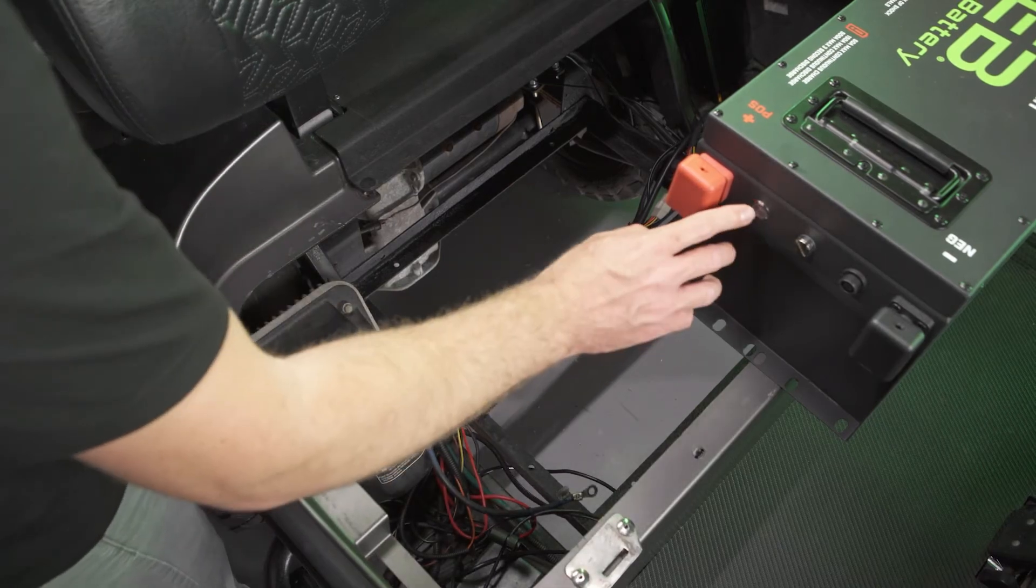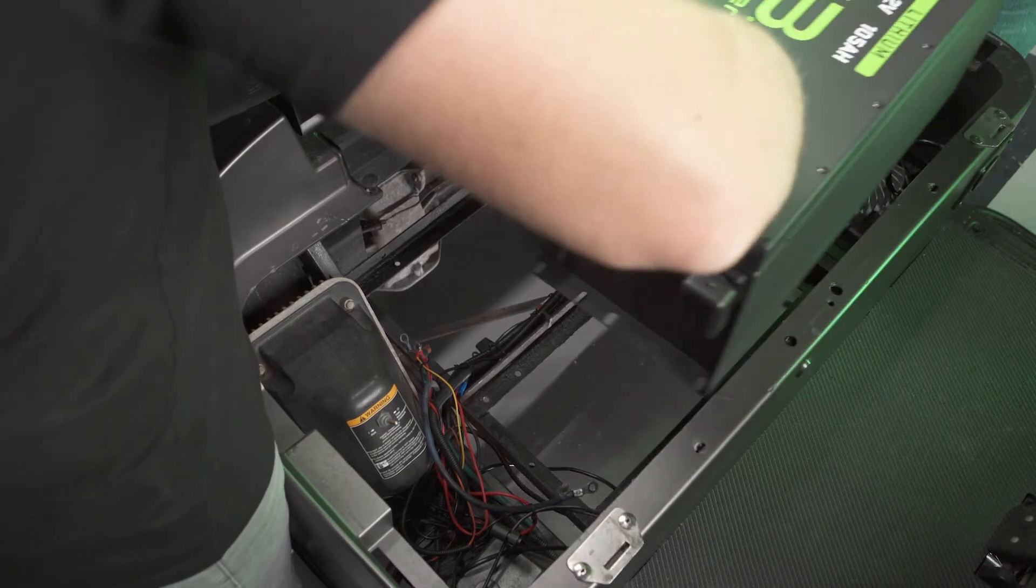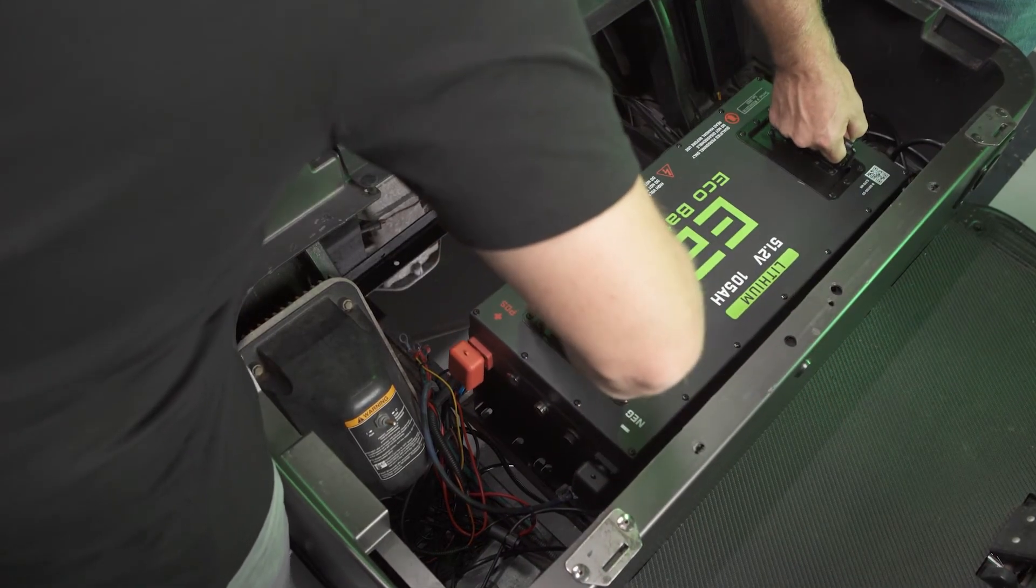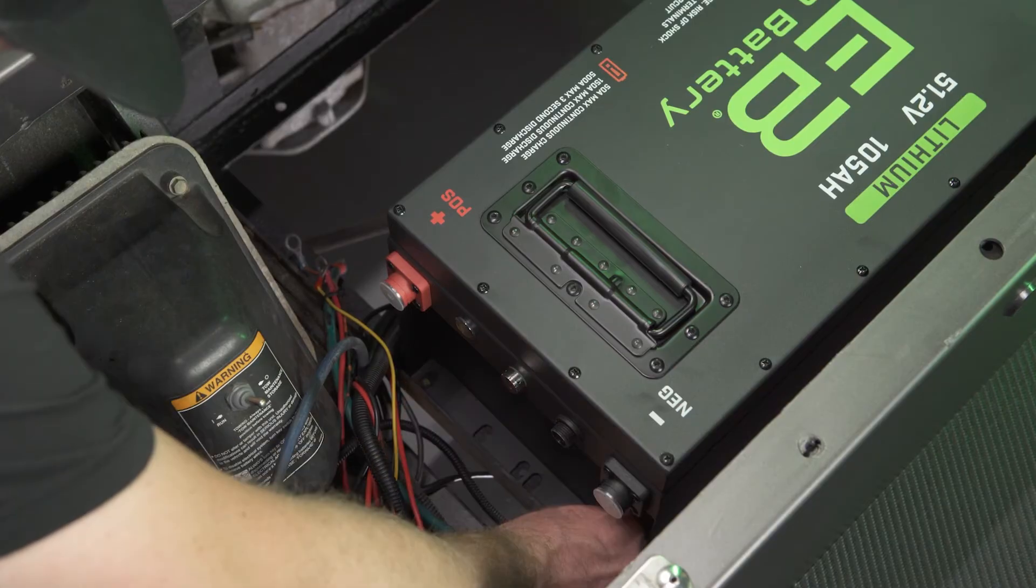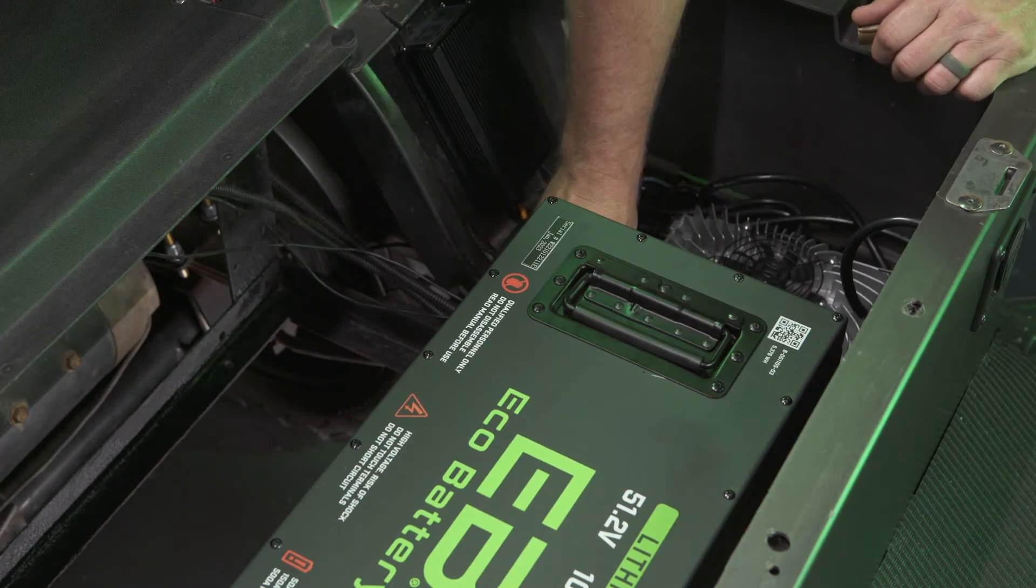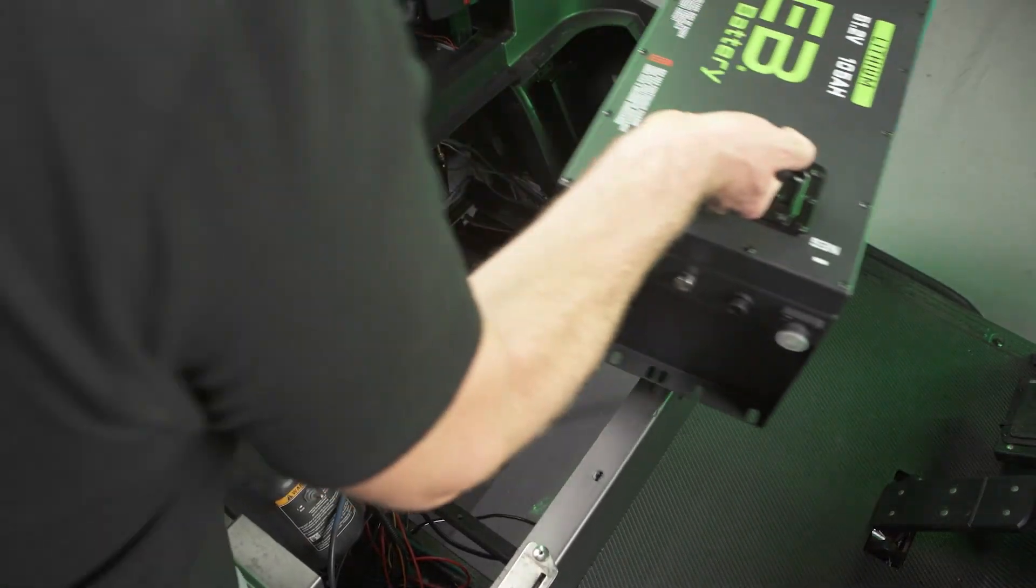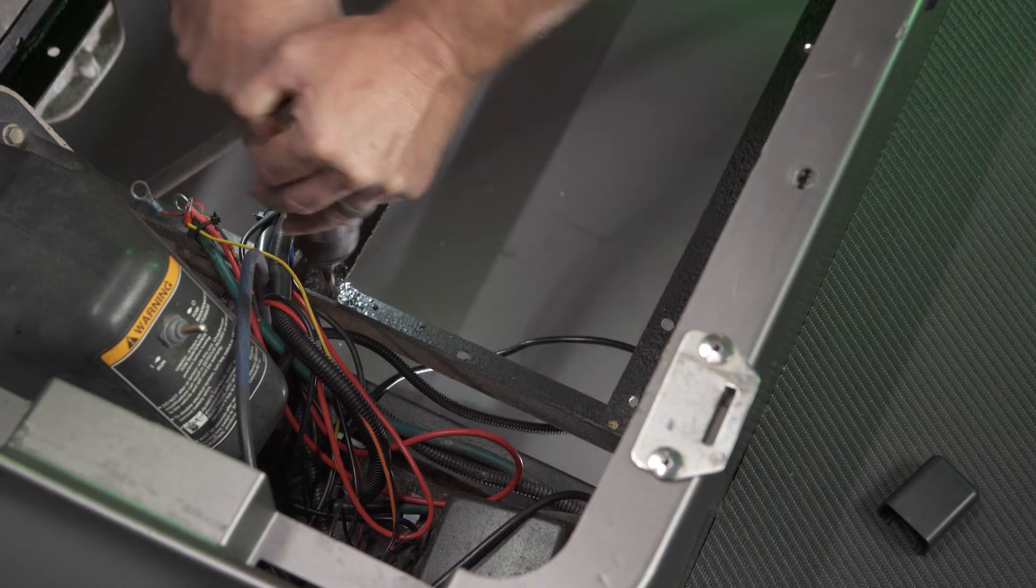Ensure eco battery is off by pressing and releasing the power button until the green LED is off. Place the battery in the tray. Mark the two outer mounting holes on each side of the battery with a marker. Remove the battery. Drill the four marked holes with a 5-16th drill bit.